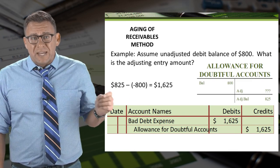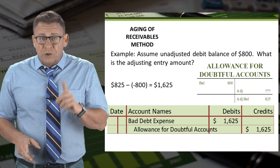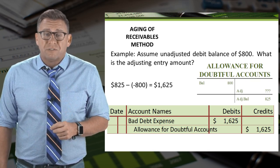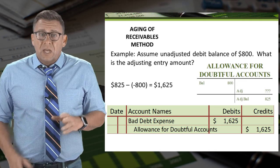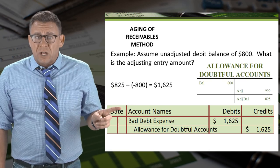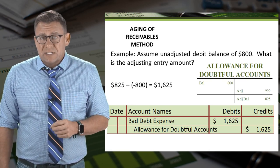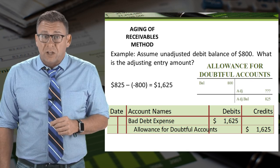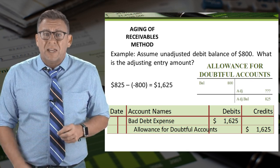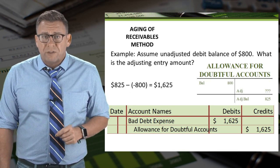Sometimes you will see an example like this: if we've written off more accounts than expected, we could temporarily have a debit balance in the allowance for doubtful accounts. In this case, we have an unadjusted debit balance of $800. In order to make this account a credit balance of $825, we need to debit bad debt expense and credit the allowance for doubtful accounts for $1,625.